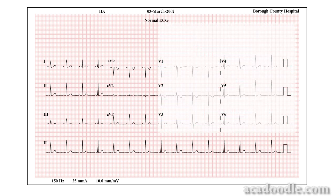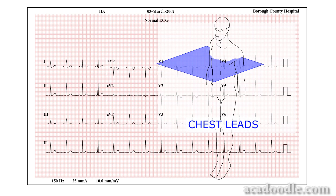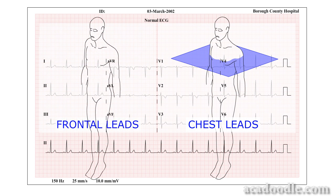The six chest leads, also referred to as the precordial leads V1 to V6, examine the flow of depolarisation and repolarisation through the heart in the horizontal or transverse plane. While a second group of six leads, the frontal leads, examine these electrical events in the vertical or frontal plane.